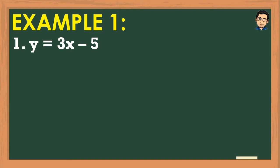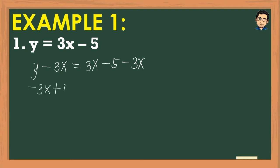We need to move 3x to the other side. The negative 5 stays on the right side because it's a constant term. So we get y - 3x = 3x - 5 - 3x, which gives us -3x + y = 0 - 5, leaving -3x + y = -5.